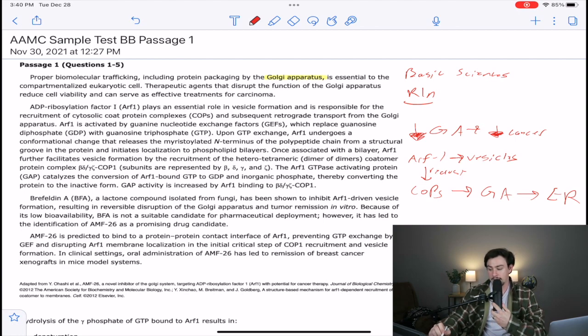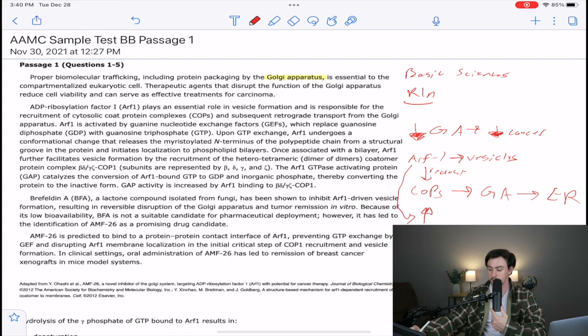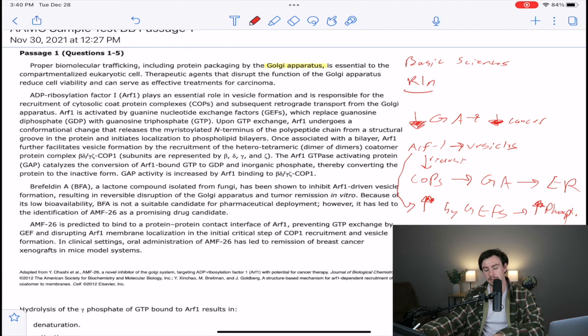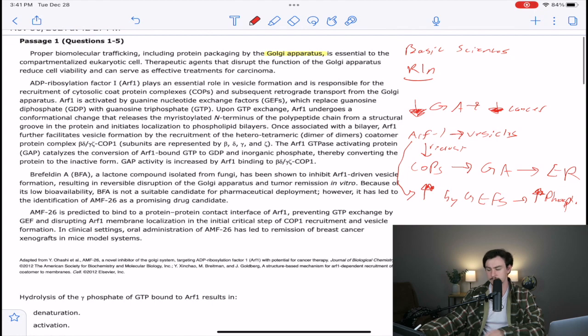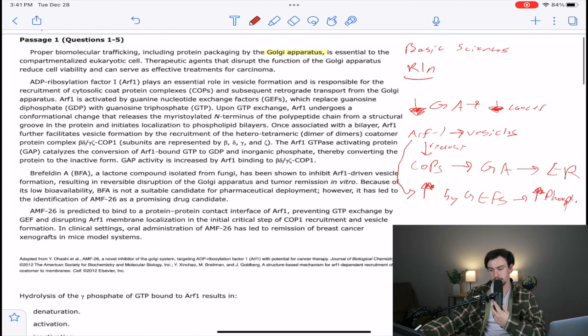It says ARF1 is activated by GEFs, which replace guanosine diphosphate or GDP with GTP. So GEFs lead to increased GTP or increased phosphorylation. Kind of makes me think right off the bat, like I guess you're a kinase maybe if you're increasing phosphorylation. But we'll see.